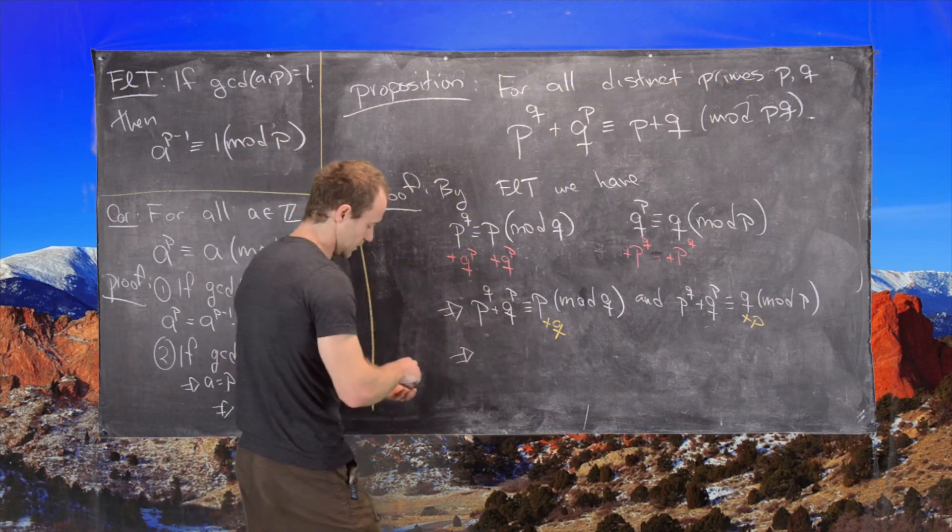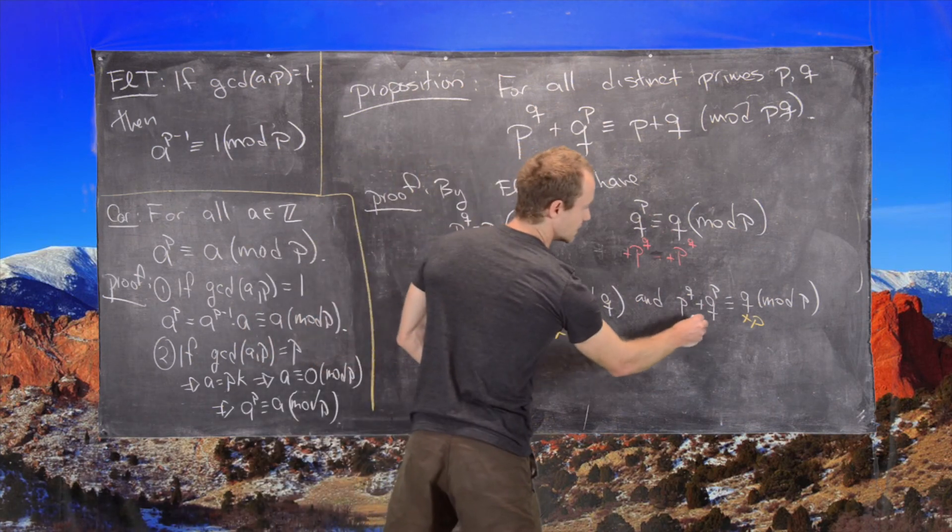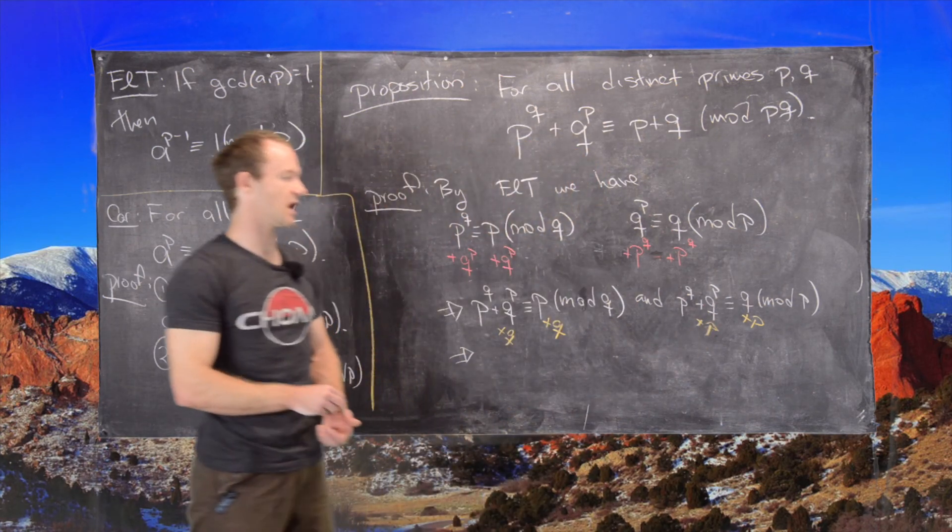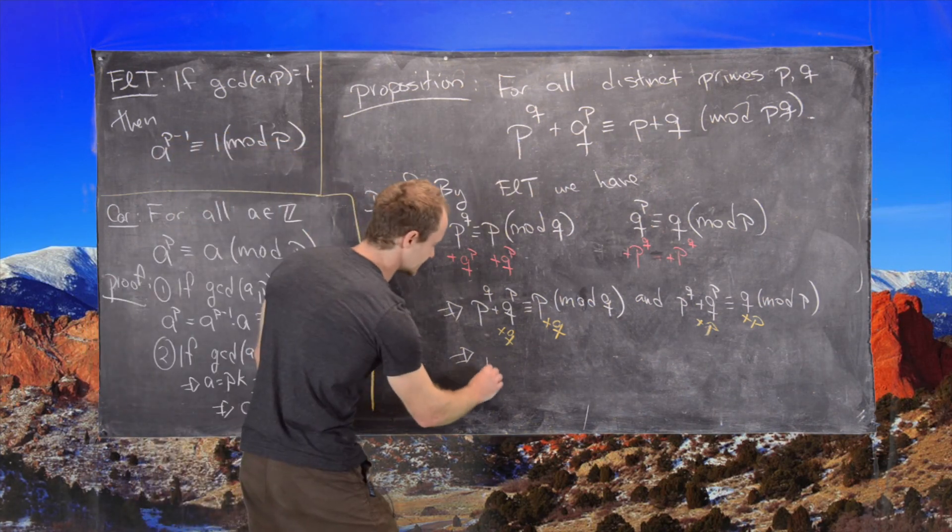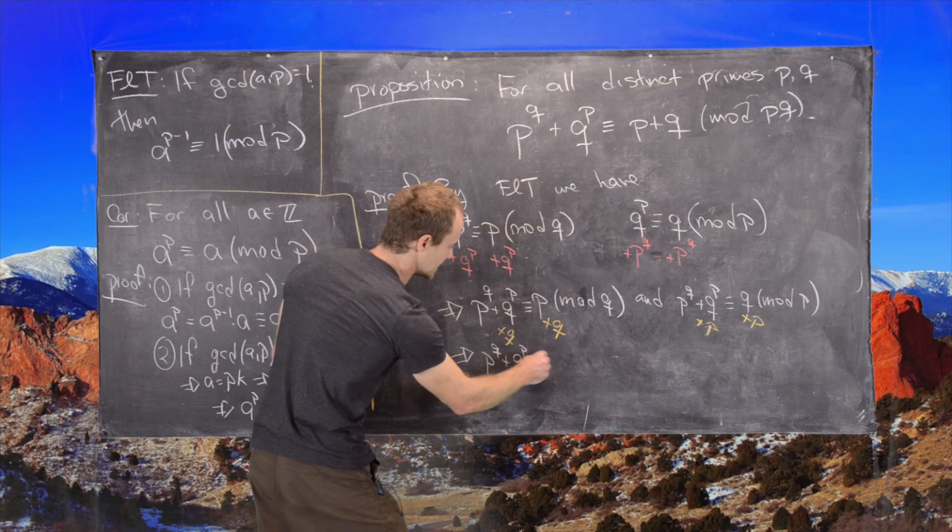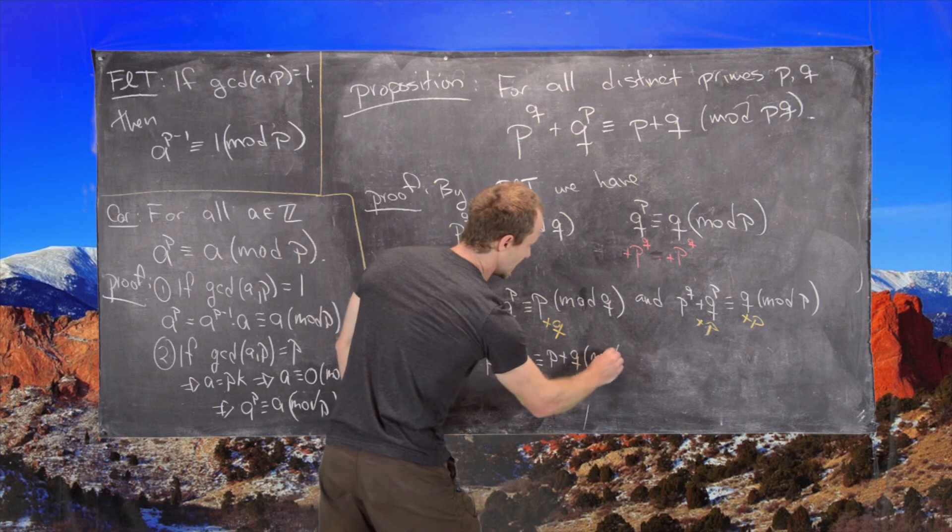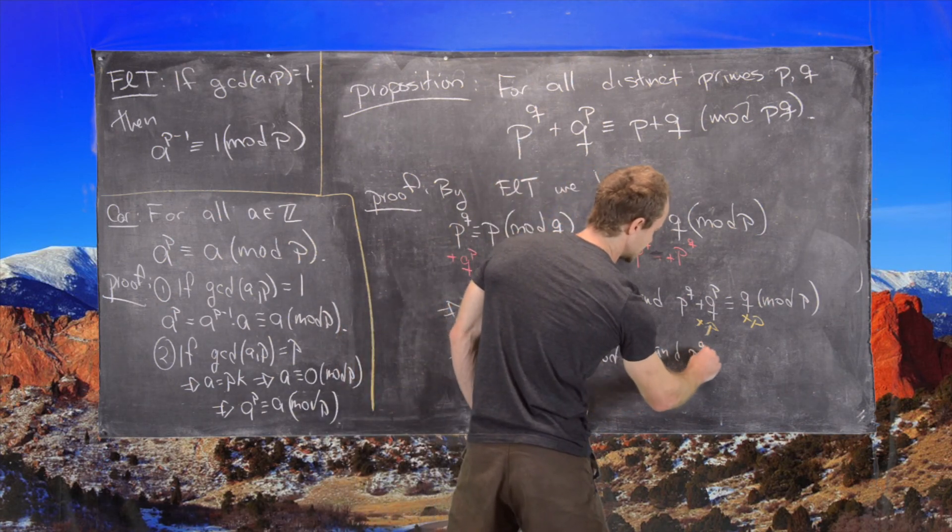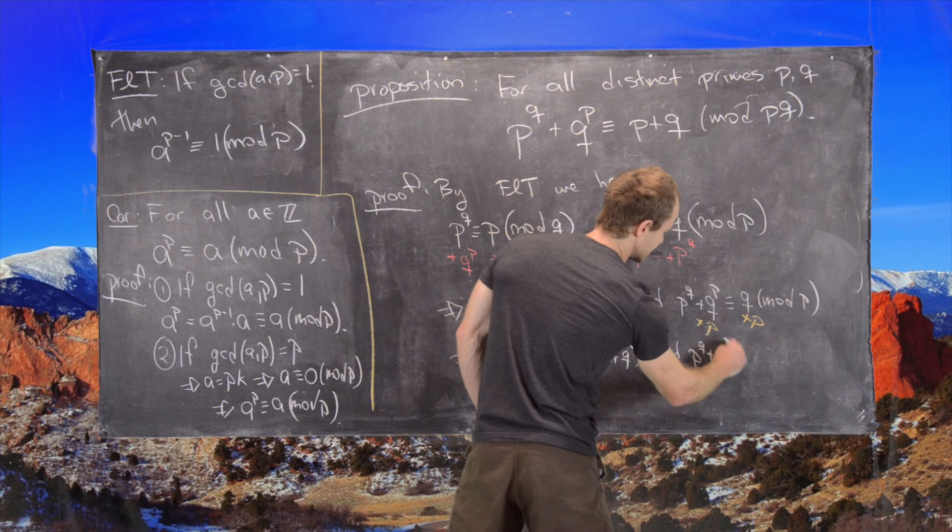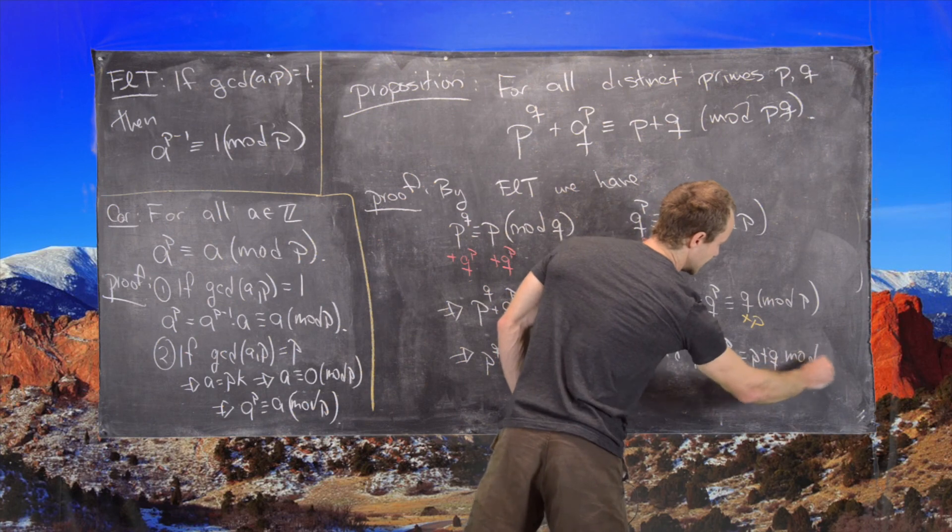So we're like adding it to this side as well, but it doesn't do anything to the congruence because of what we're taking the mod with respect to on both sides. So in this case, we get P to the Q plus Q to the P is congruent to P plus Q mod Q. And P to the Q plus Q to the P is congruent to P plus Q mod P.